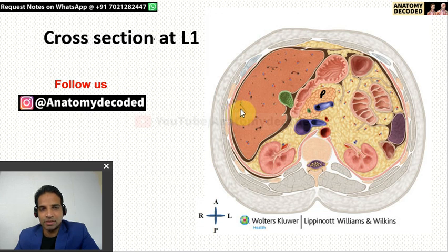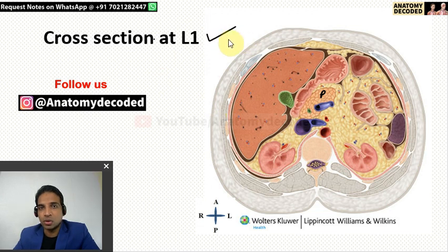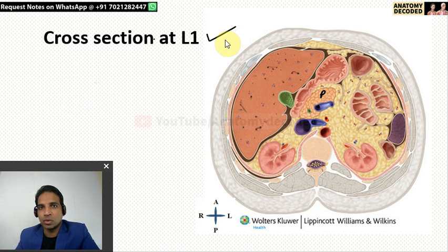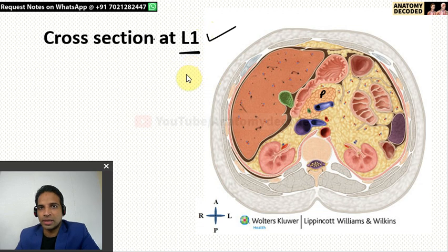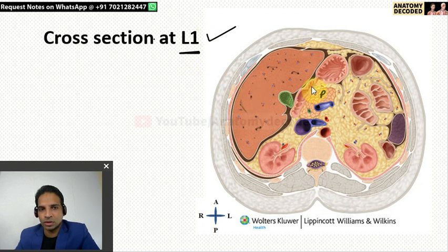Now let us cover the cross section at L1 vertebrae. L1 is a very important landmark in the abdomen. If you have learned about the various quadrants of the abdomen, there are two vertical planes and two horizontal planes which divide the abdomen into nine quadrants. The upper horizontal plane corresponds to the L1 vertebrae, and it is also referred to as the transpyloric plane. So what anatomical structure can we expect in this section? We can expect the pylorus of the stomach — this region is the pylorus of the stomach.